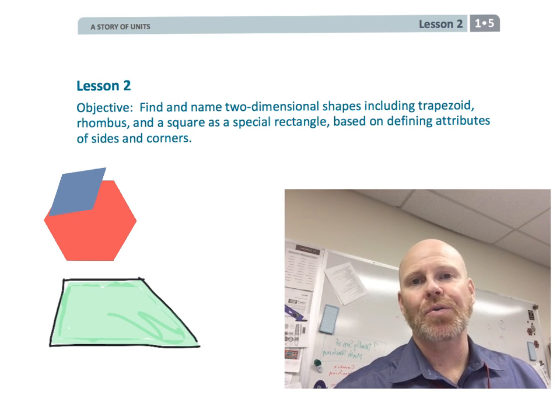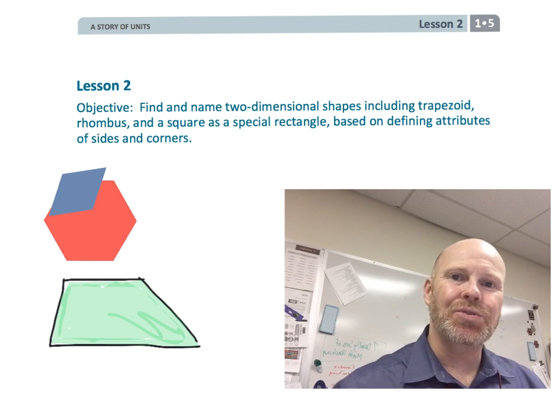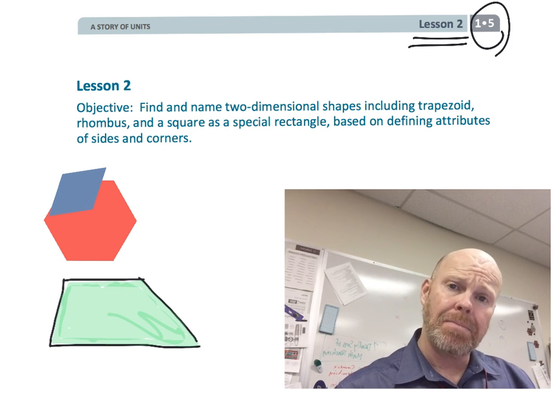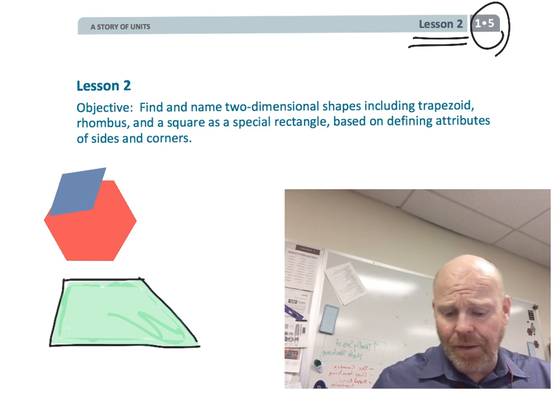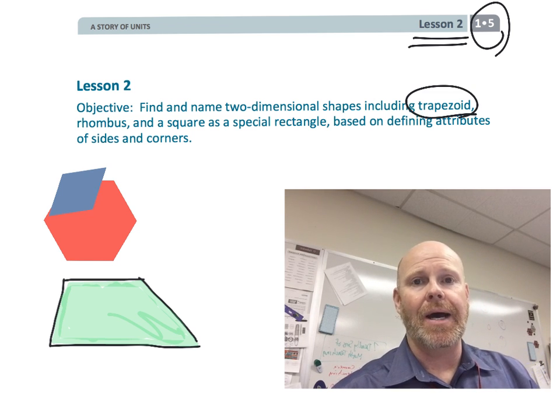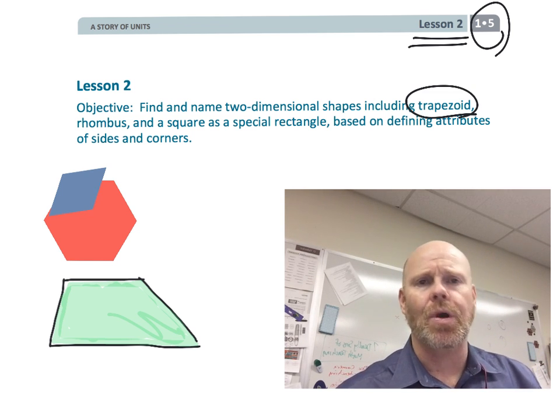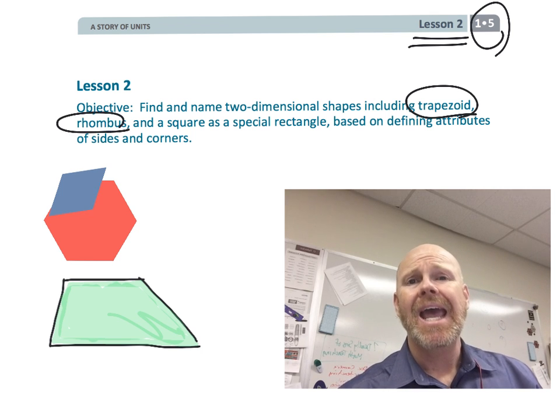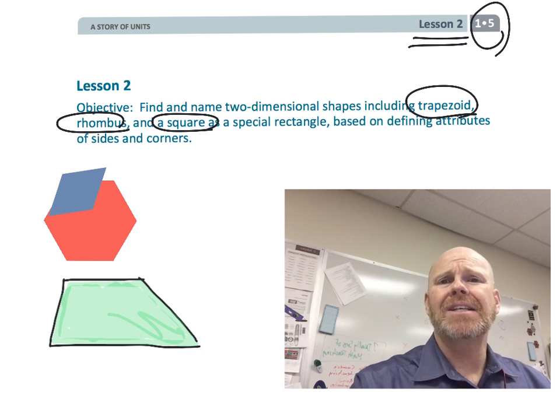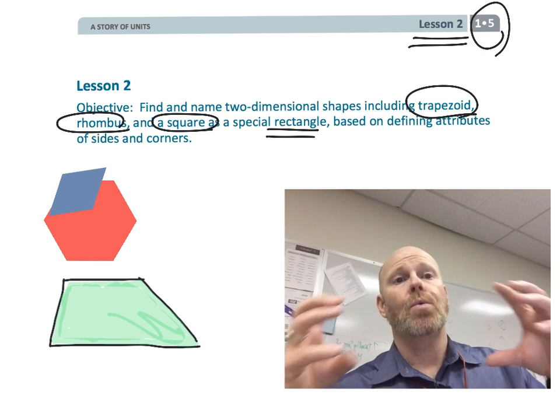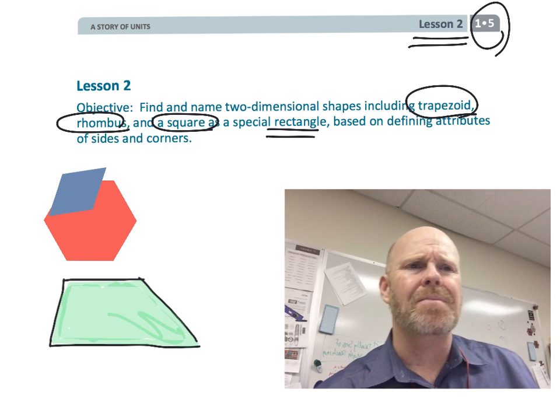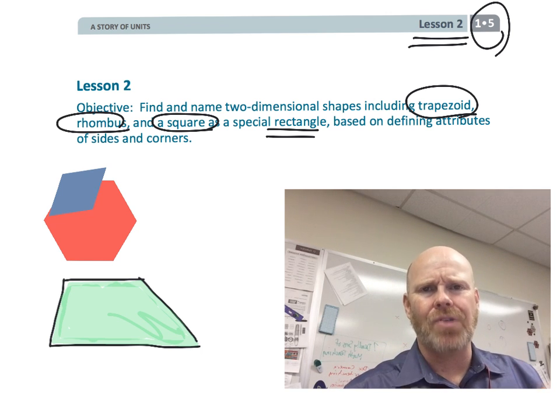Alright, this is first grade module 5, lesson 2, and in this lesson students are going to be adding a new shape to their repertoire, to their little vocabulary toolkit. We're going to be adding a trapezoid to our vocabulary. Of course, we're also going to be talking about a rhombus, and we're also going to be talking about the square as being a special rectangle, or really also a special rhombus, but we'll talk about that later.